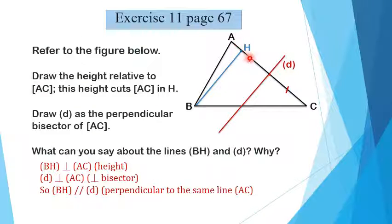pH is perpendicular to AC since pH is the height relative to AC. D is also perpendicular to AC because it's the perpendicular bisector. From these two lines I can say that pH and D are parallel, since two lines perpendicular to the same third line are parallel to each other.